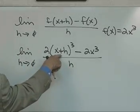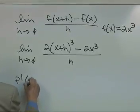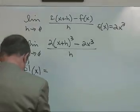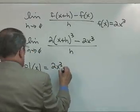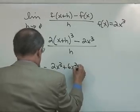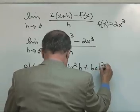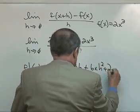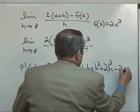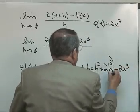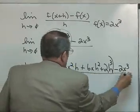And using the binomial expansion this would come out to be f prime of x is equal to, and I'll tell you what I got here, 2x cubed plus 6x squared h plus 6x h squared plus 2h cubed minus the 2x cubed. This part right here was this. All over h.